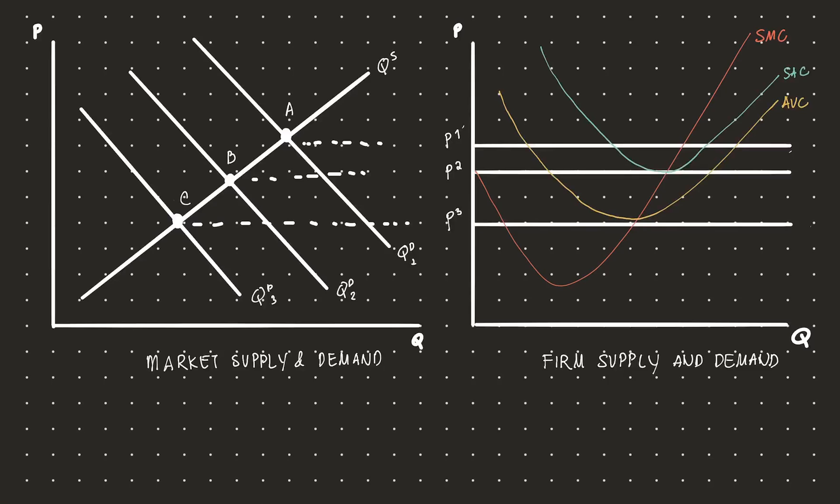You'll notice that here we have a graph for the market—this is your market supply and market demand—and you also have a graph for firm supply and demand. The goal of this part in this video will be to derive what the firm supply curve is. This graph to the left pertains to market supply and demand. We have market supply here, and three market demands. Price is set at the intersection of demand and supply, like basic economics.